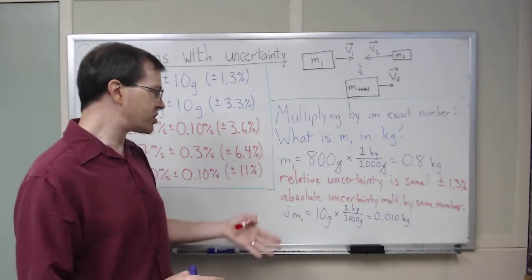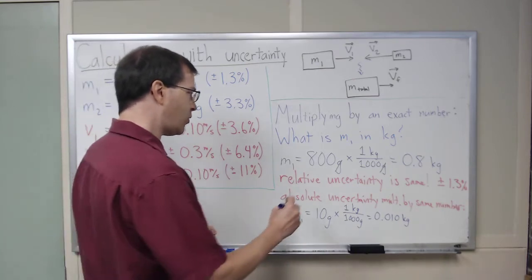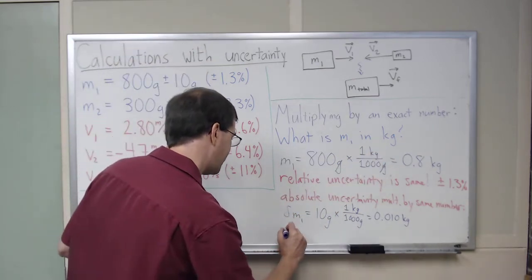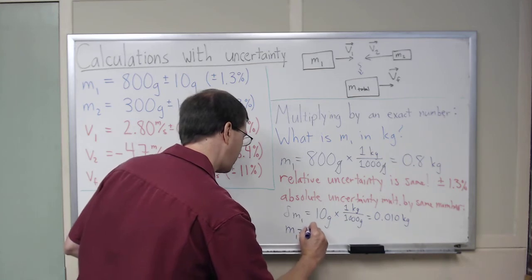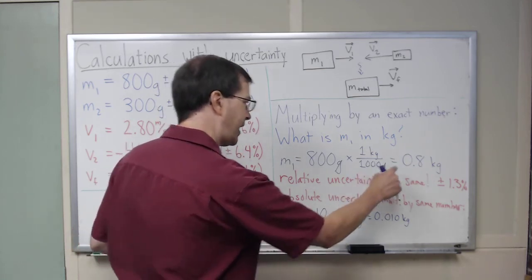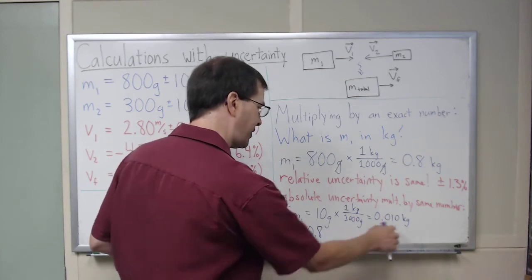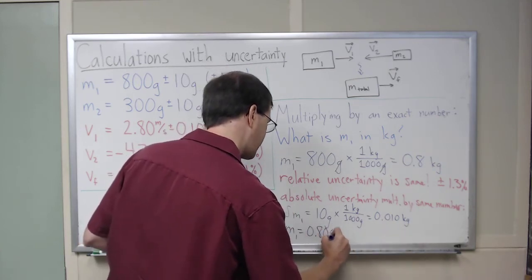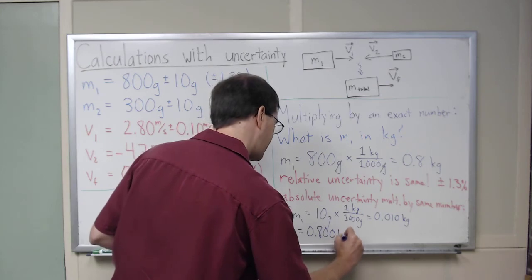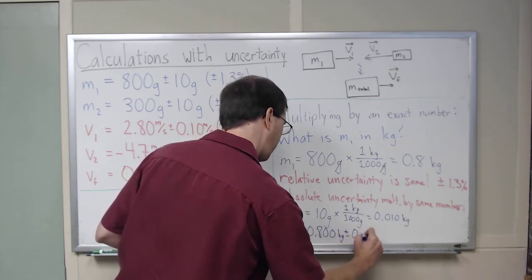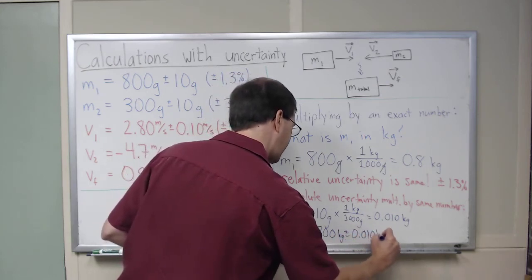So multiply by an exact number, you just do that, and so of course then we would say that our answer is, we would report this as M1 equals 0.8, and I keep as many decimal places as I have here, 0.800 kilograms plus or minus 0.010 kilograms.